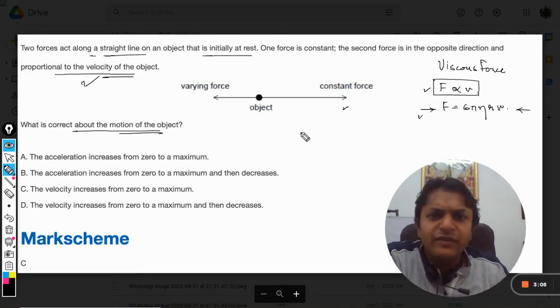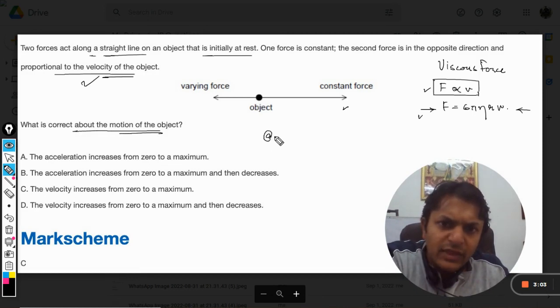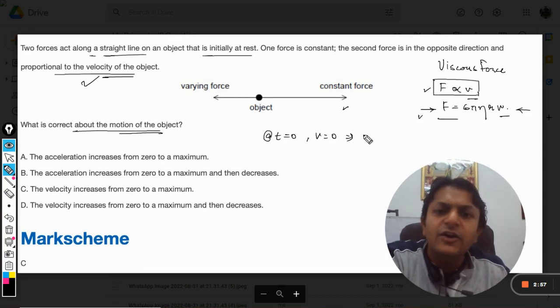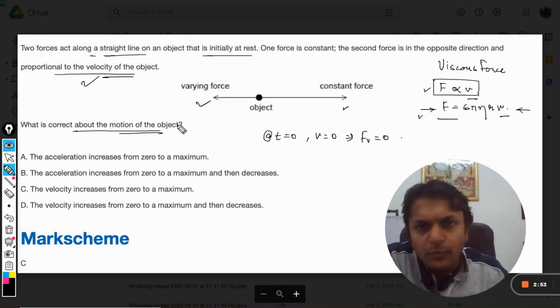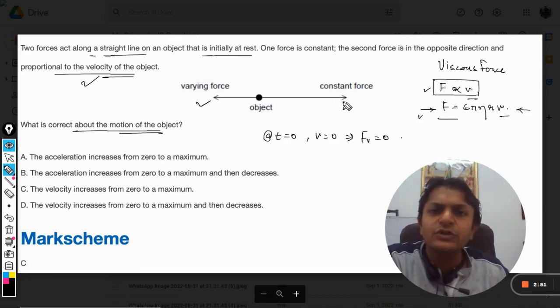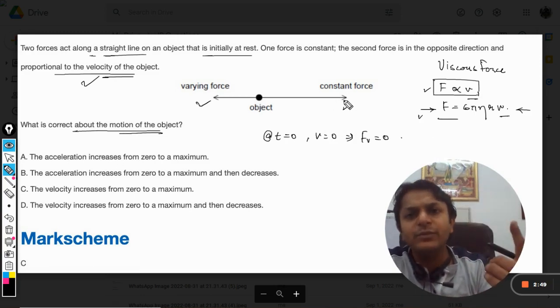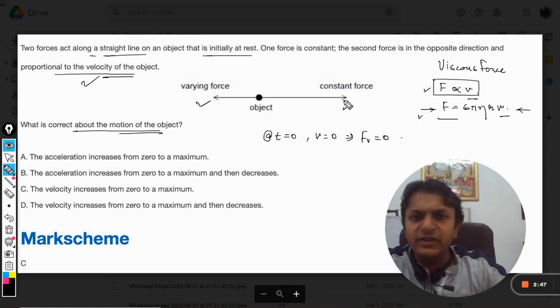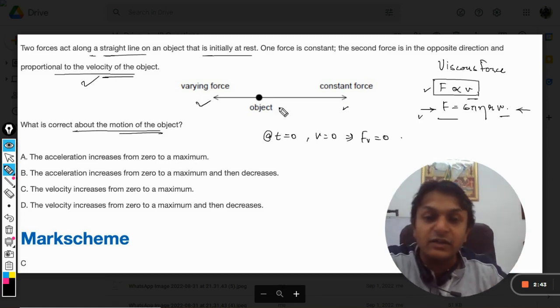Obviously, when the velocity is 0, like when t equals 0, the velocity is 0. Now if the velocity is 0, it means that the viscous force will also be 0. So under the influence of one particular force, the velocity will increase, the body will accelerate and the velocity will start increasing. But after some time,